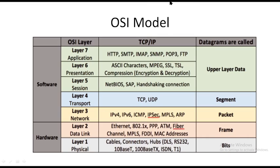These are the protocols used in the layers. The first two layers are for hardware; the next five layers are for software. The messages are converted as packets called datagrams. In the physical layer packets are called bits, in the data link layer they are called frames, in the network layer they are called packets, in the transport layer they are called segments, and for layers five, six, and seven they are called upper layer data.